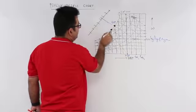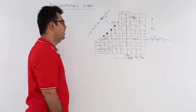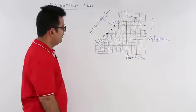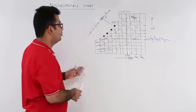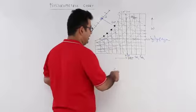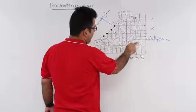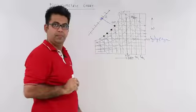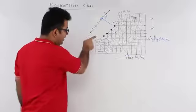When you extend the wet bulb temperature line beyond the saturation line to the enthalpy axis, the point where it cuts that axis gives us the enthalpy value at that particular condition. So the psychrometric chart tells you the dry bulb temperature, specific humidity, wet bulb temperature, dew point, and enthalpy.